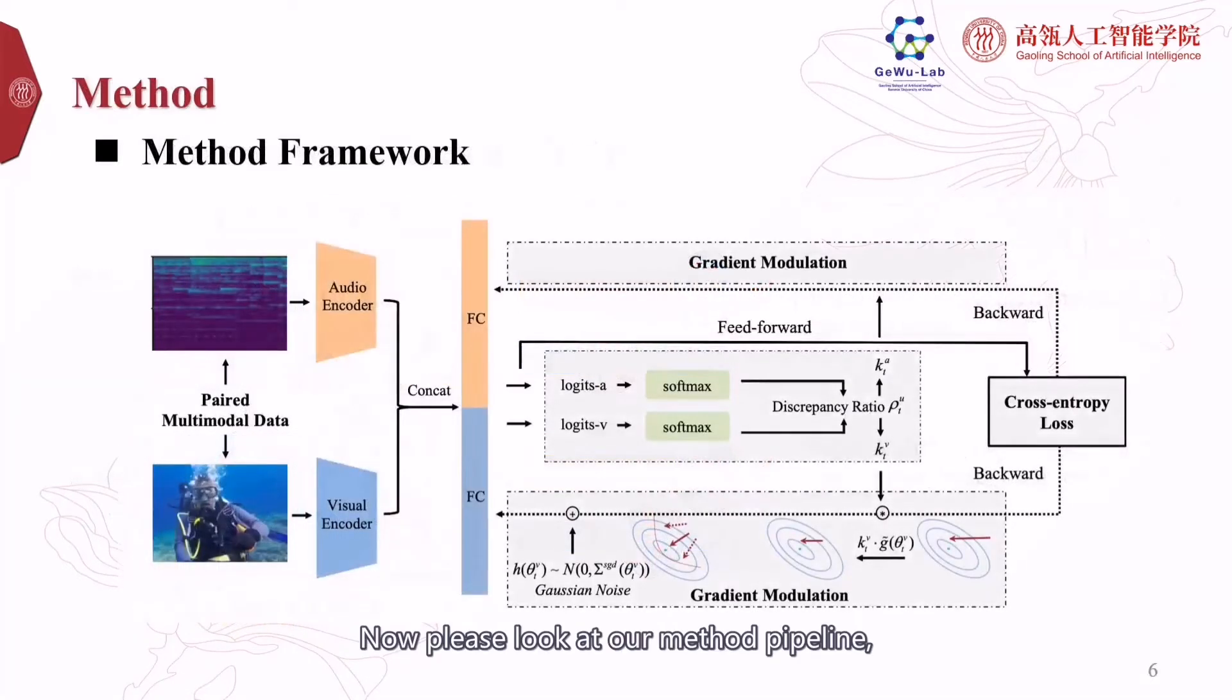Now please look at our method pipeline. Totally, we just adaptively modulate the backward gradient in optimizing according to the performance discrepancy between modalities. And such optimizing can be viewed as two steps.